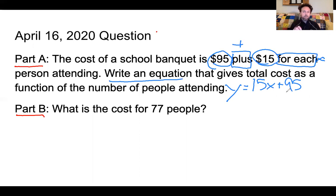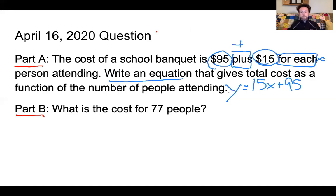My $95 does not change — that remains constant. What does change is the coefficient of 15 in 15x: my coefficient and variable x change depending on how many people there are. But 95 is the flat rate. If nobody shows up but you still want to rent the room, it starts at $95 and goes up from there.